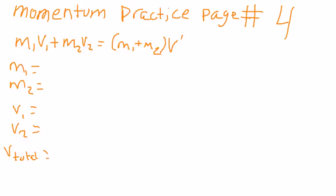Our list of givens are the first mass is 1 kg, the second mass is 9 kg, the first velocity is moving at 10 m per second, and the second velocity is 0 m per second. And then you're looking for the total velocity of the two groups.